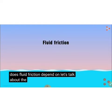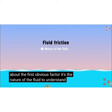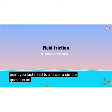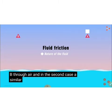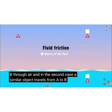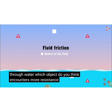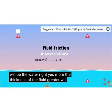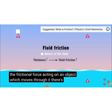So what does fluid friction depend on? The first obvious factor is the nature of the fluid. Consider an object moving from point A to B through air, and a similar object traveling from A to B through water. Clearly, the object in water encounters more resistance. More the thickness of the fluid, greater will be the frictional force acting on an object as it moves through it.